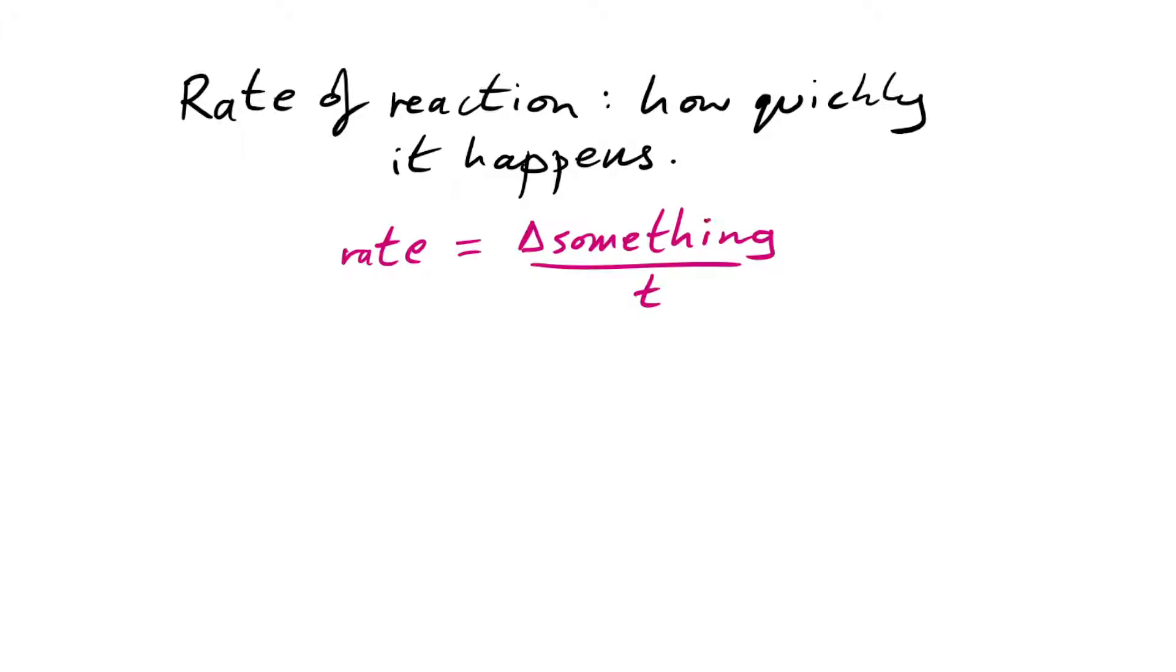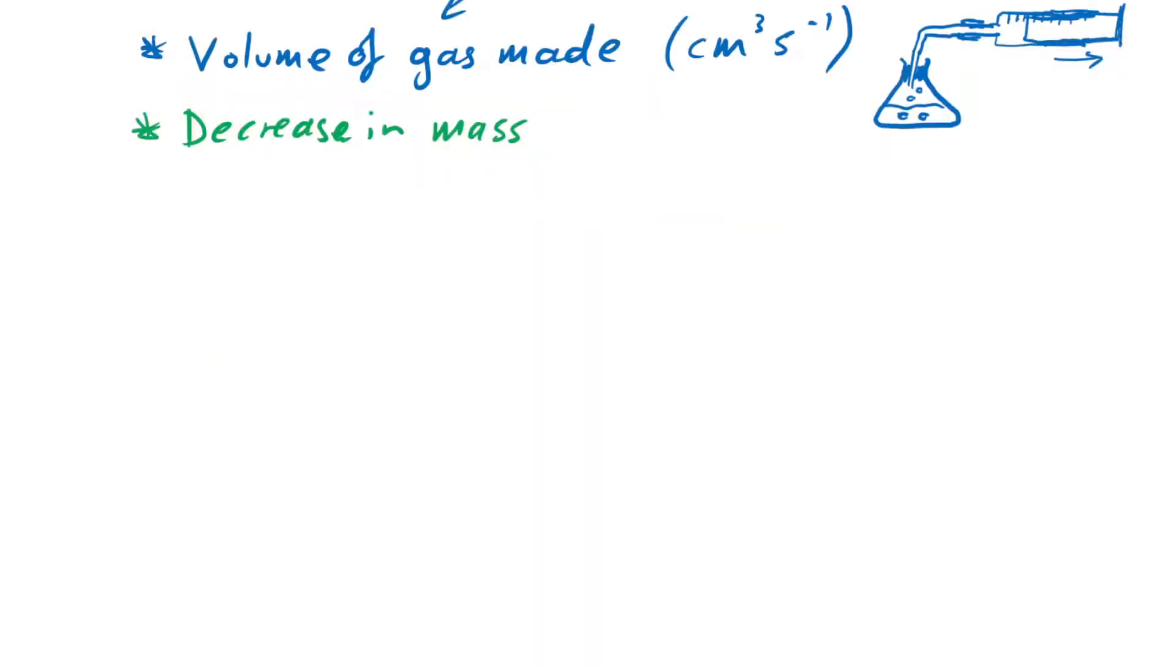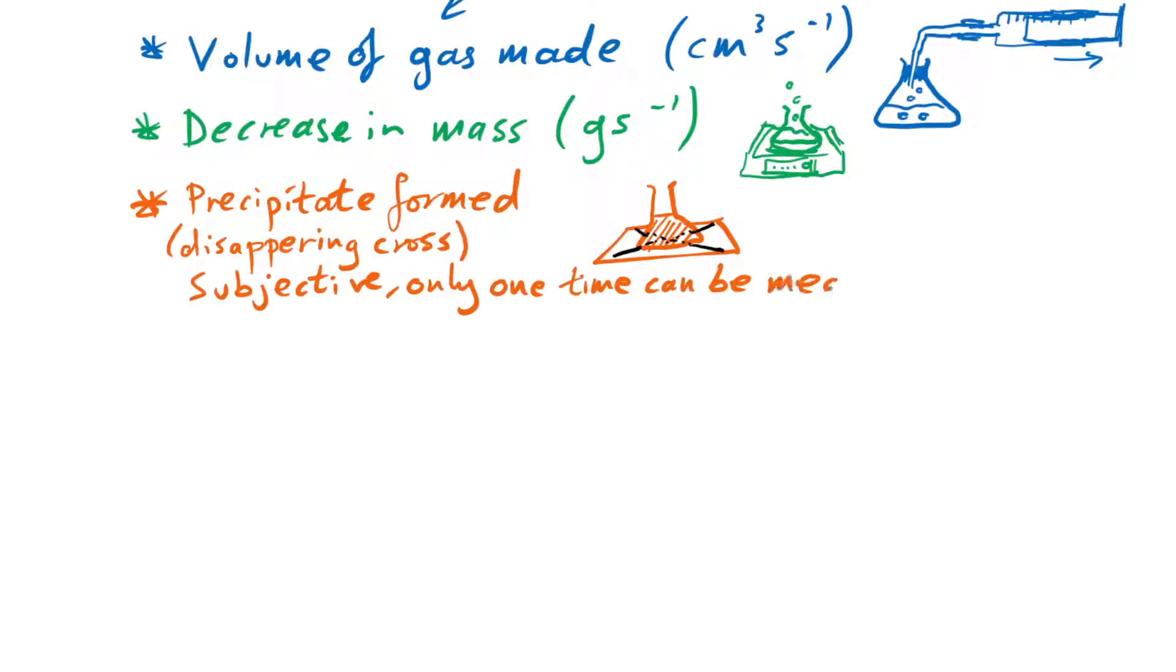So what is this change in something we can measure in a reaction? We can measure the change in volume of gas made by having the gas go into a gas syringe. We can measure the decrease in mass over time if a gas is one of the products, so we just have the reaction vessel on a balance. We can measure the precipitate formed. We do that with our classic disappearing cross on a piece of paper underneath the reaction vessel.